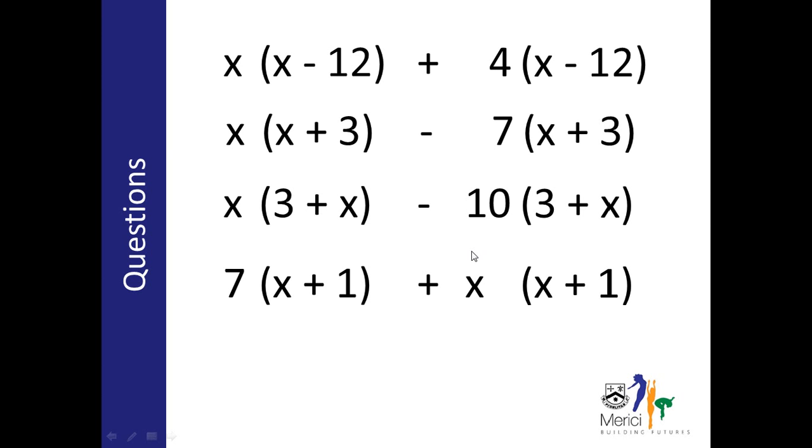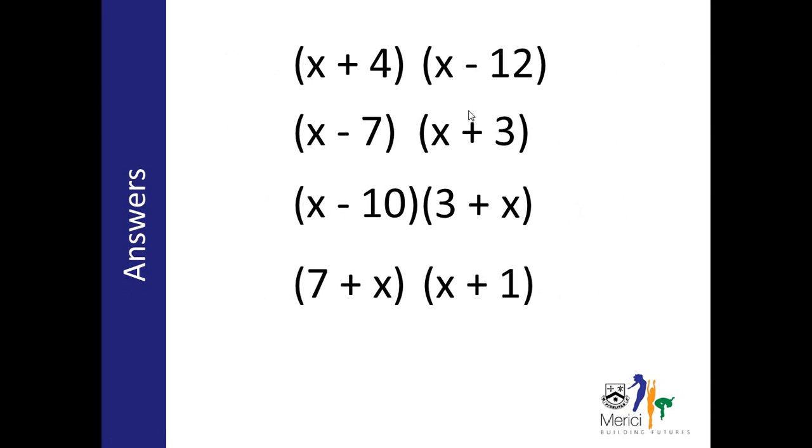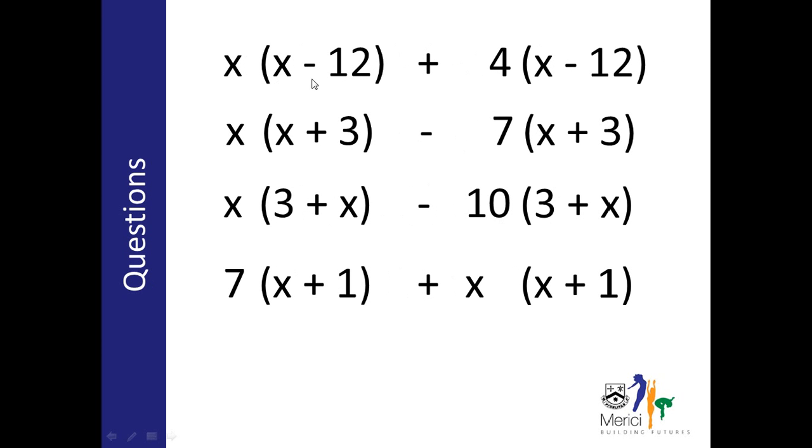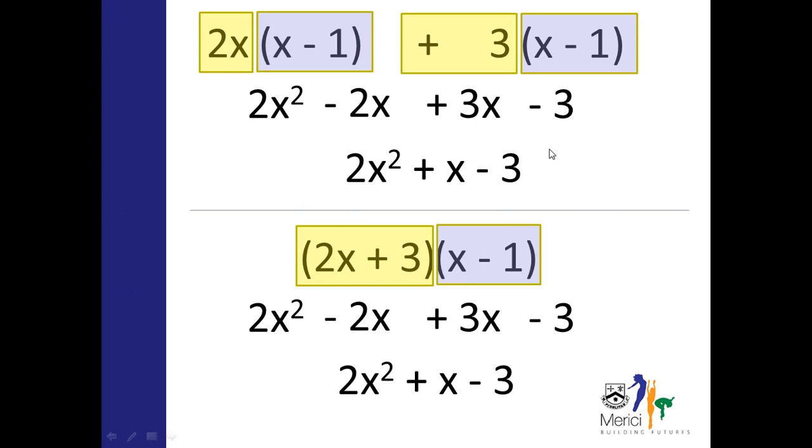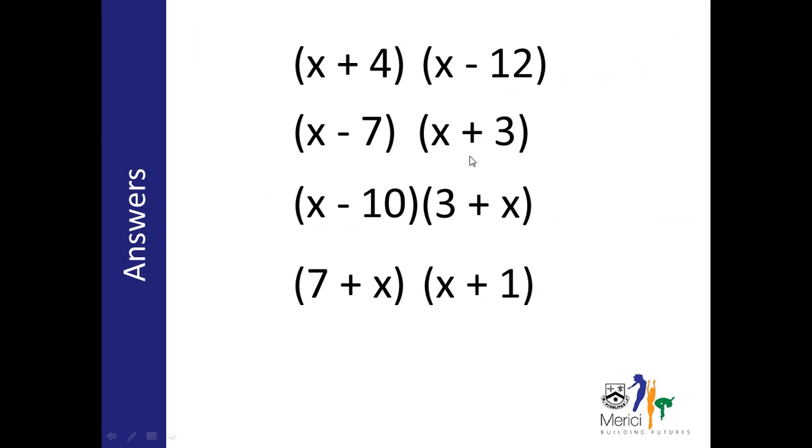So if we're moving on to the answers now, this first one will become x plus 4 and x minus 12. So x plus 4, x minus 12, which is the x and 4 and the x minus 12. Next one, x minus 7, x plus 3. Oops, x minus 7, x plus 3. And you can check your other two answers there.